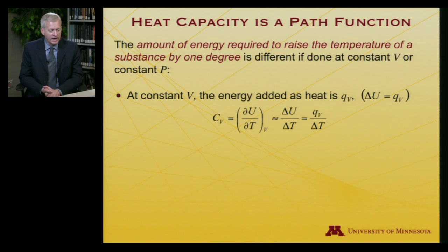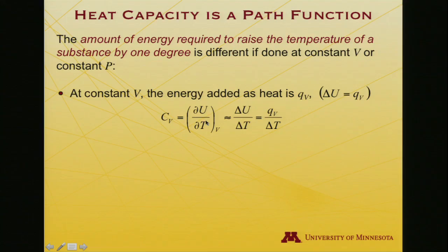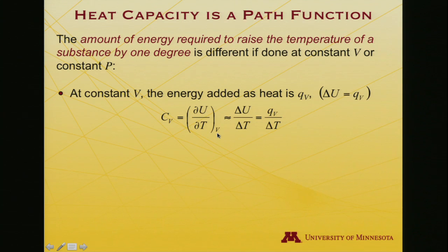At constant volume, the energy added as heat, Q_V, is equal to ΔU. That's the definition we have of heat capacity — it is the change in U with respect to change in temperature at constant volume. In infinitesimal form, that's the partial derivative of U with respect to T at constant volume. So at constant volume, change in internal energy is heat, and that's an expression of heat capacity: heat relative to change in temperature.